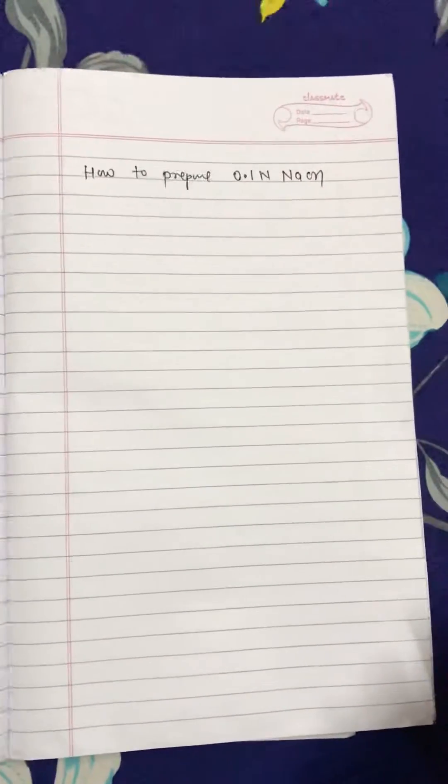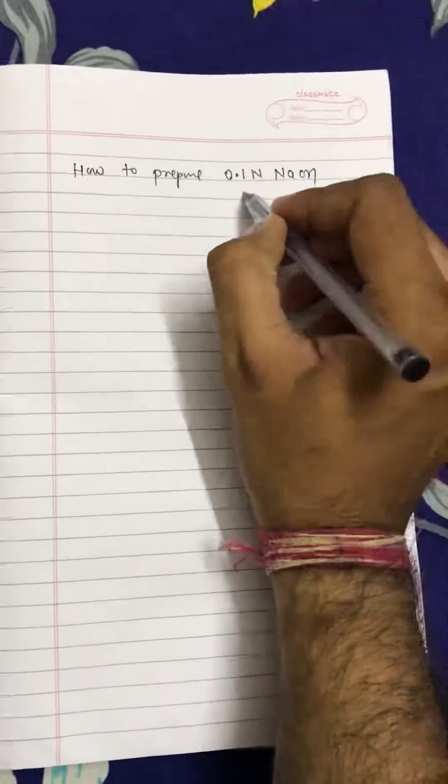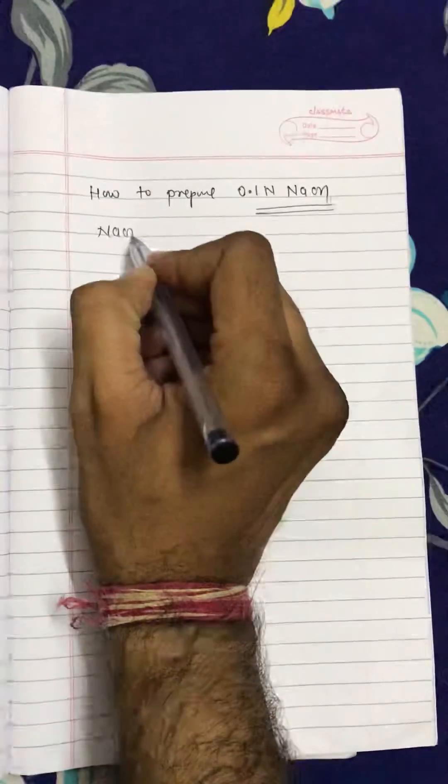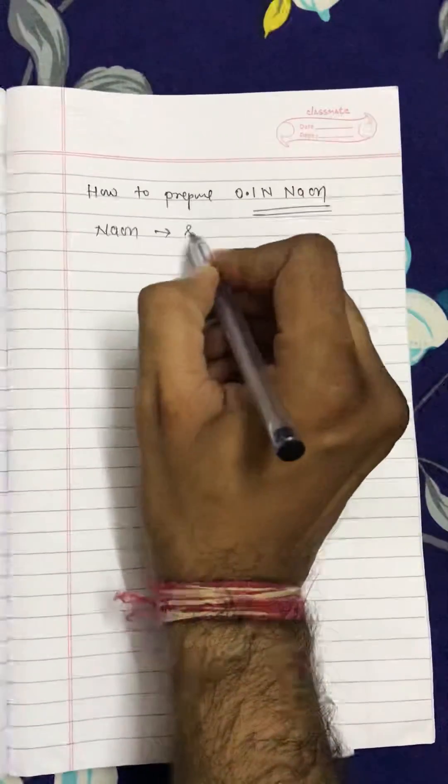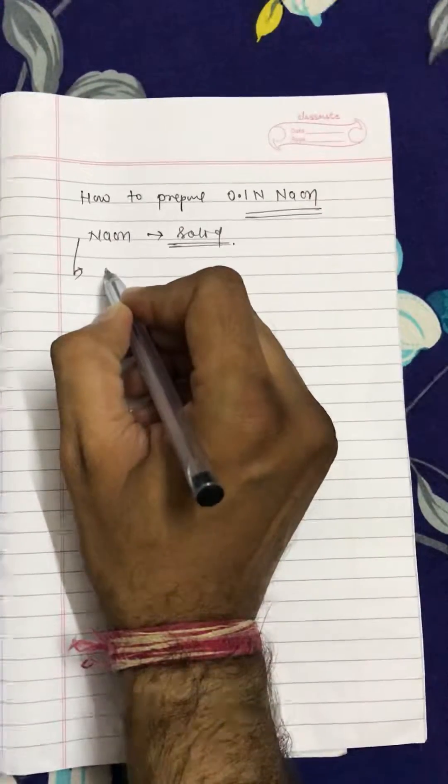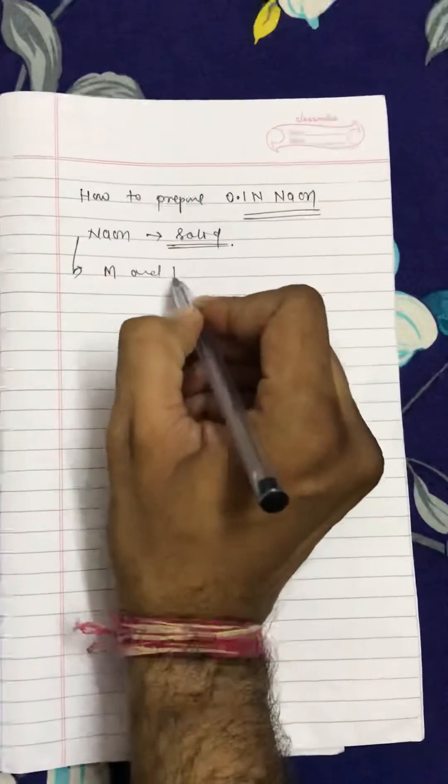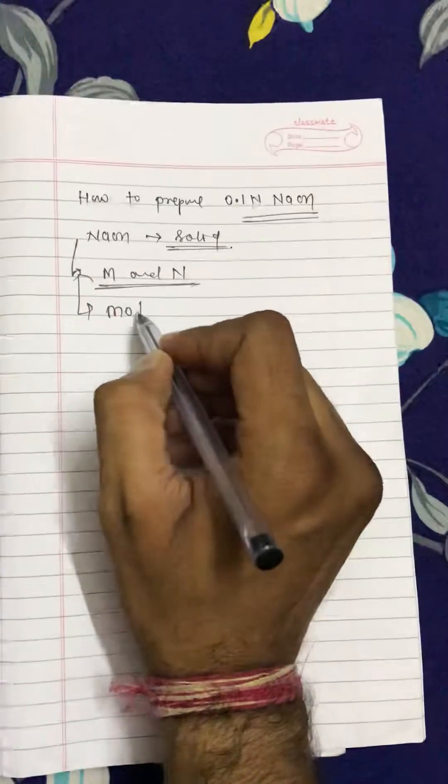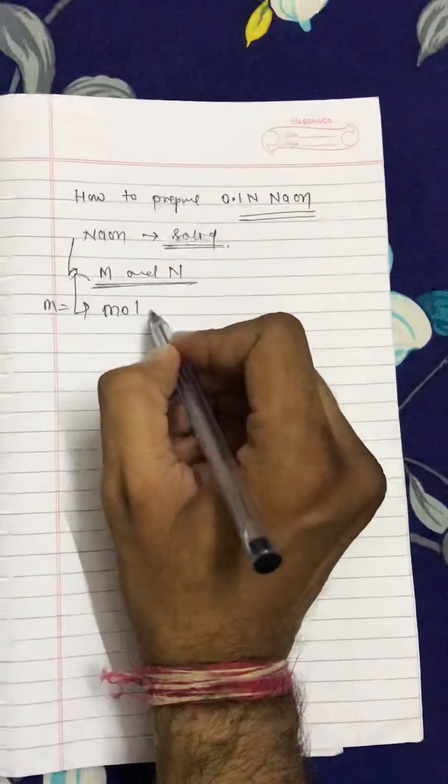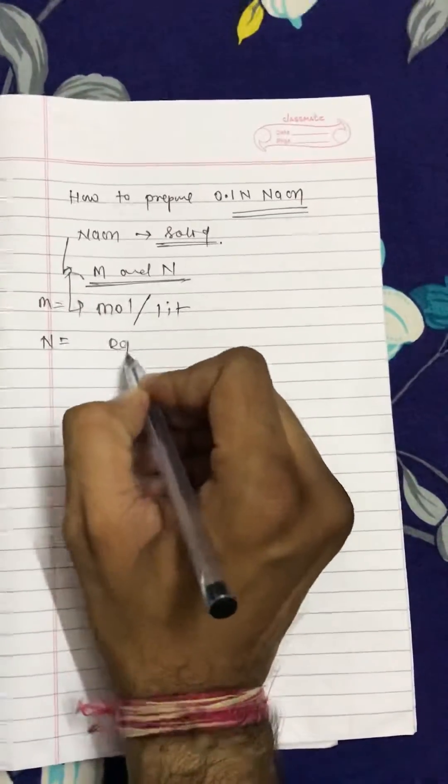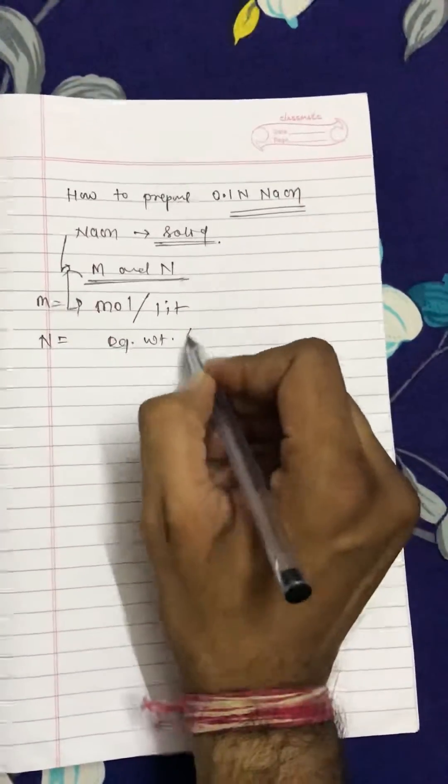Hello everyone, today we are discussing how to prepare 0.1 normal NaOH. As we know, NaOH is present in solid form. Molarity is moles per liter, and normality is equivalent weight per liter.